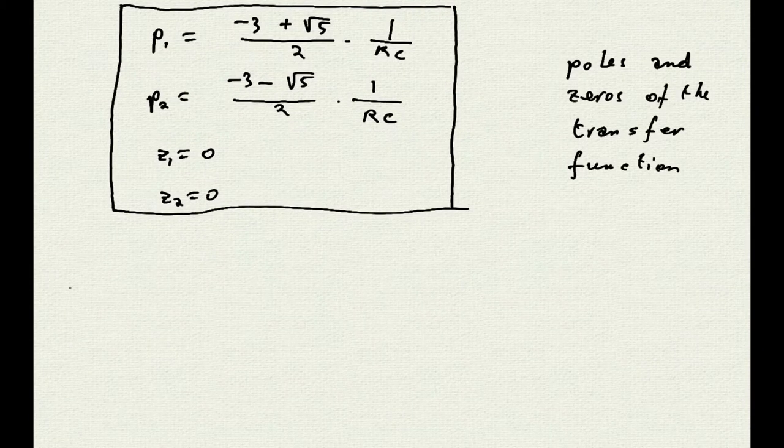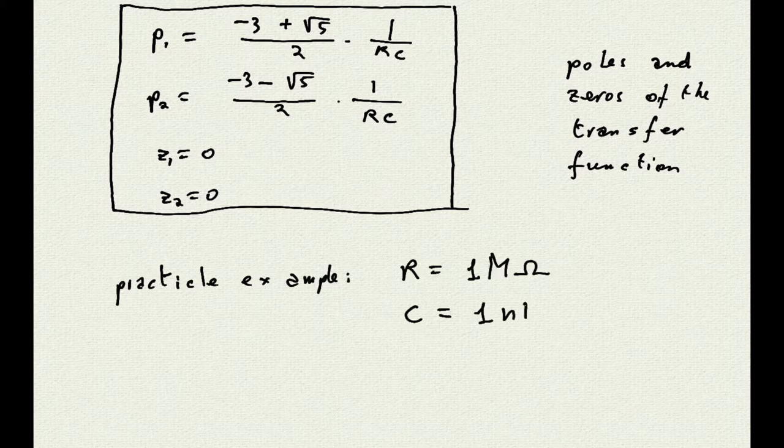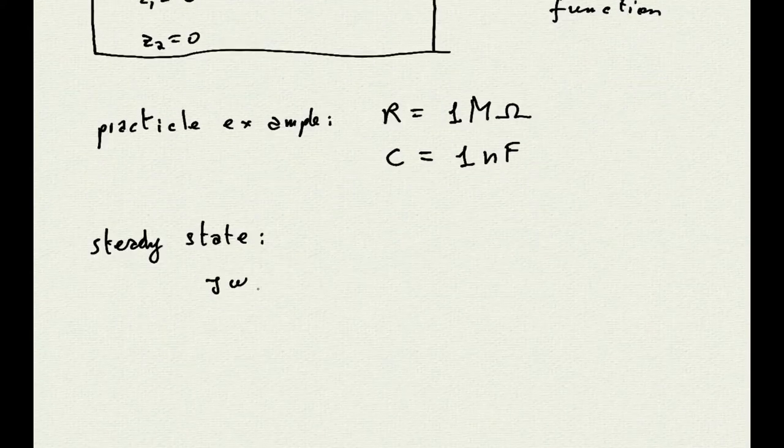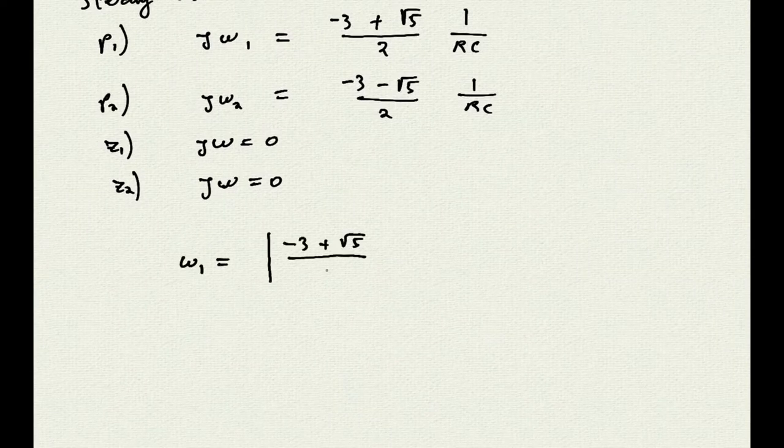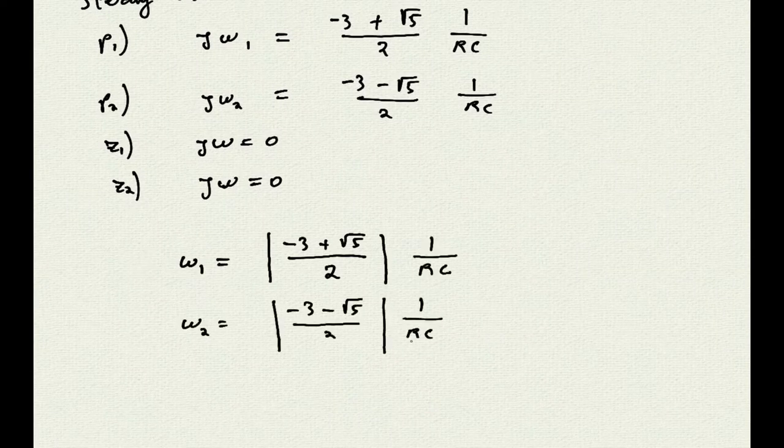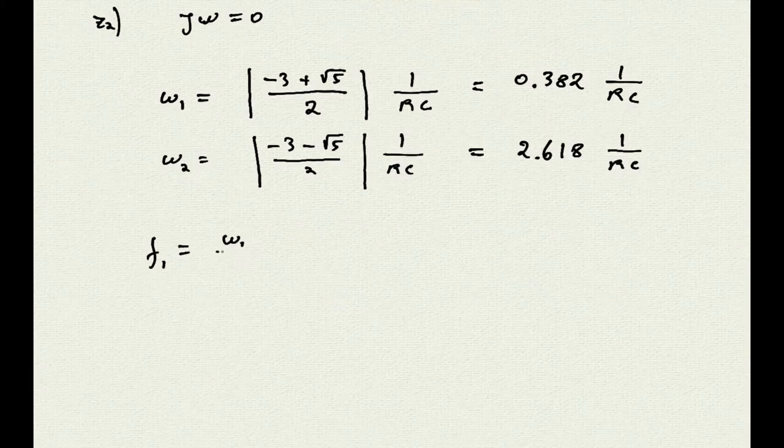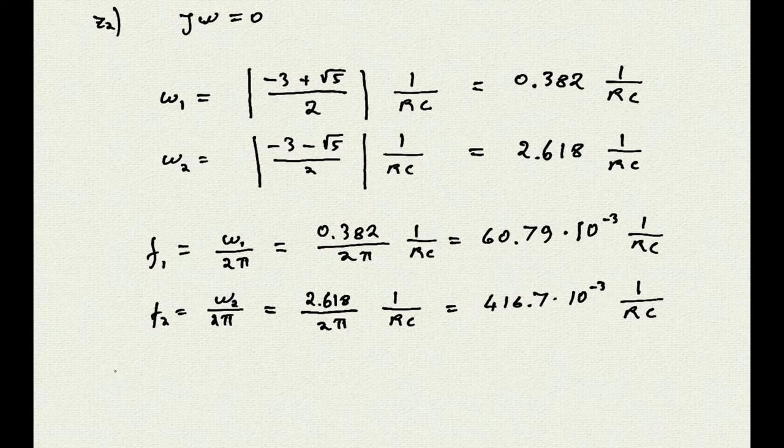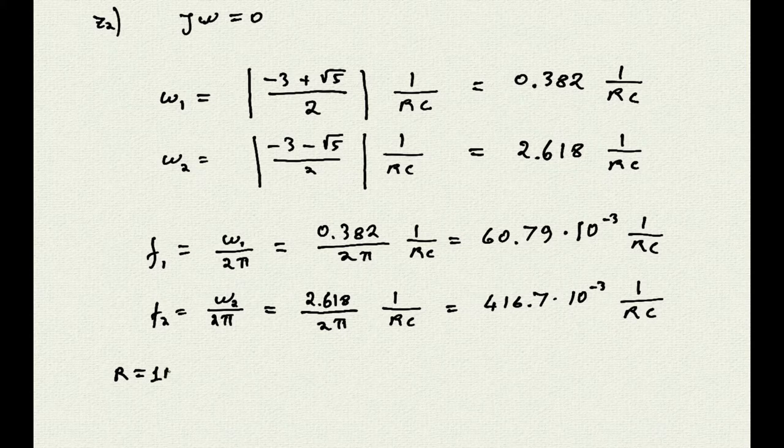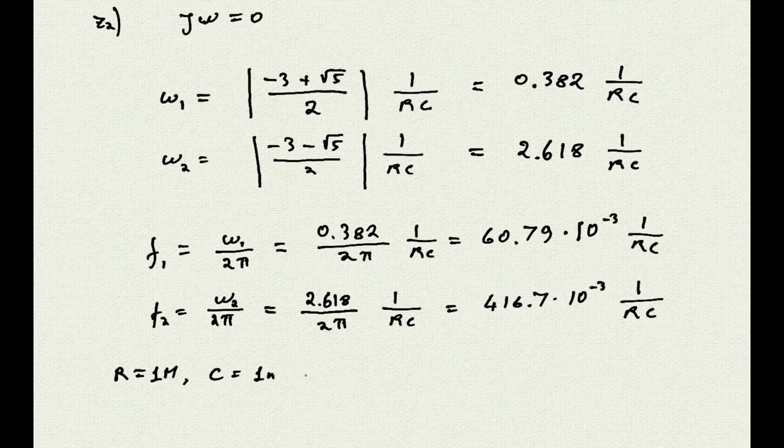The two poles can finally be expressed in terms of frequency rather than the angular velocity. Note how the values of frequencies f1 and f2 can still be expressed in terms of the formula for the first order filter, but adjusted by a correction factor due to the load of the second part of the filter on the first.